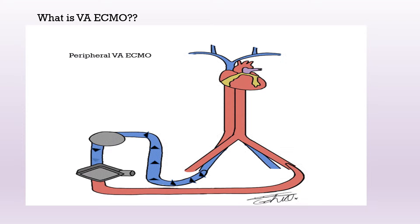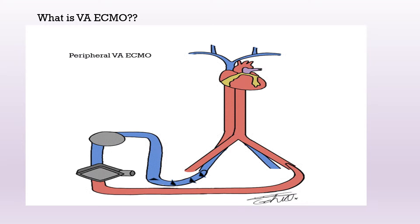What is VA ECMO? VA ECMO means Veno-Arterial. The first letter refers to the drainage cannula, which is in the vein, and the second letter refers to the return cannula, which is in the artery.